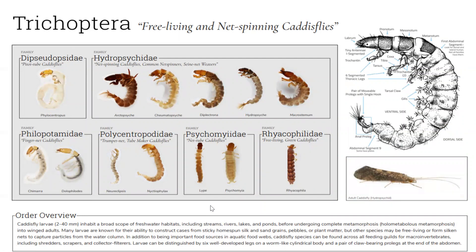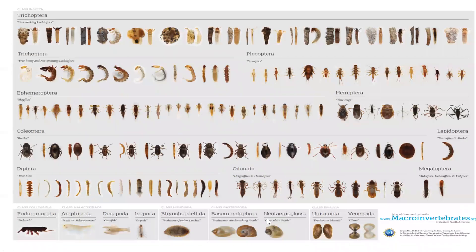On the other side of the caddisfly sheet you see the free-living and net-spinning caddisflies, plus a morphological diagram, an image of an adult, and an order overview. The design team has also created a beautiful poster which you can print and laminate to have at a training — it's one way to see images of the possible community you may encounter while monitoring a stream. These are also great in a classroom; professors have put them up in entomology labs, and they're really useful at public events.